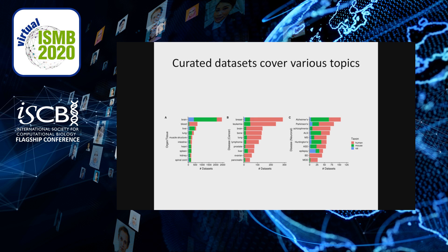The topics covered by Gemma datasets are wide-ranging. Here, I show some examples of ontology terms with the plotted values being the number of associated datasets. The examples are thematically grouped, with panel A being various tissues, and panels B and C being various cancers and neuronal disorders.